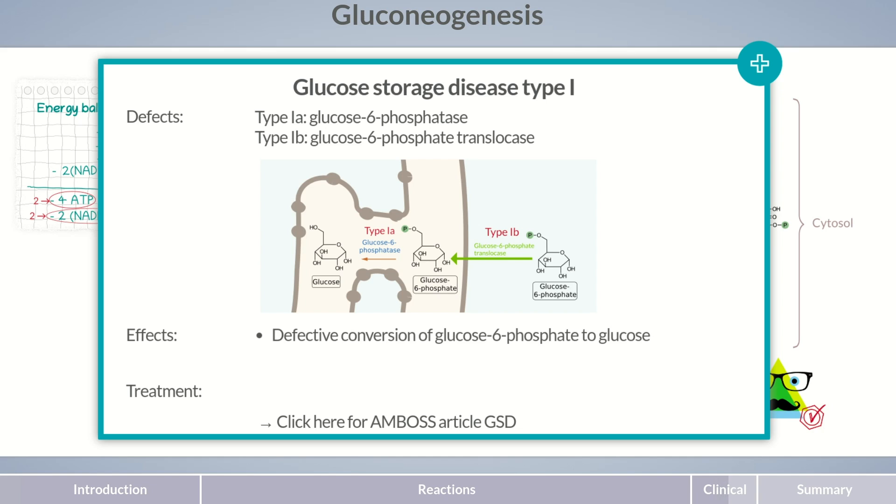Since glucose can only leave the cells in a non-phosphorylated form, glycogen storage disease type 1 causes recurrent hypoglycemia. In order for patients to maintain their blood sugar level without regularly raiding the fridge and eating meals during the night, nasogastric tubes are used during this time. These tubes provide patients with an adjusted dose of glucose.